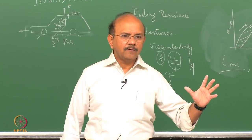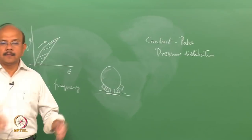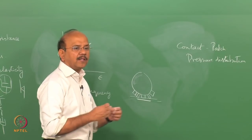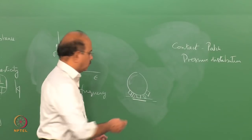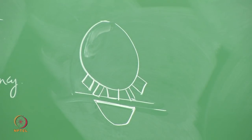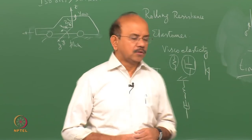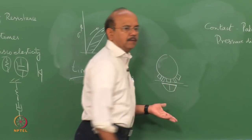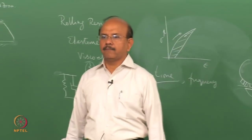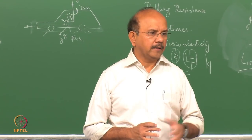Contact pressure exists not only when the tyre rolls but also when the vehicle is stationary. When the vehicle is stationary, the contact patch involves a number of treads. The rubber is symmetrically compressed about the centre — whatever is compressed has to come out the other side. So the contact pressure distribution is symmetric when the tyre is stationary.